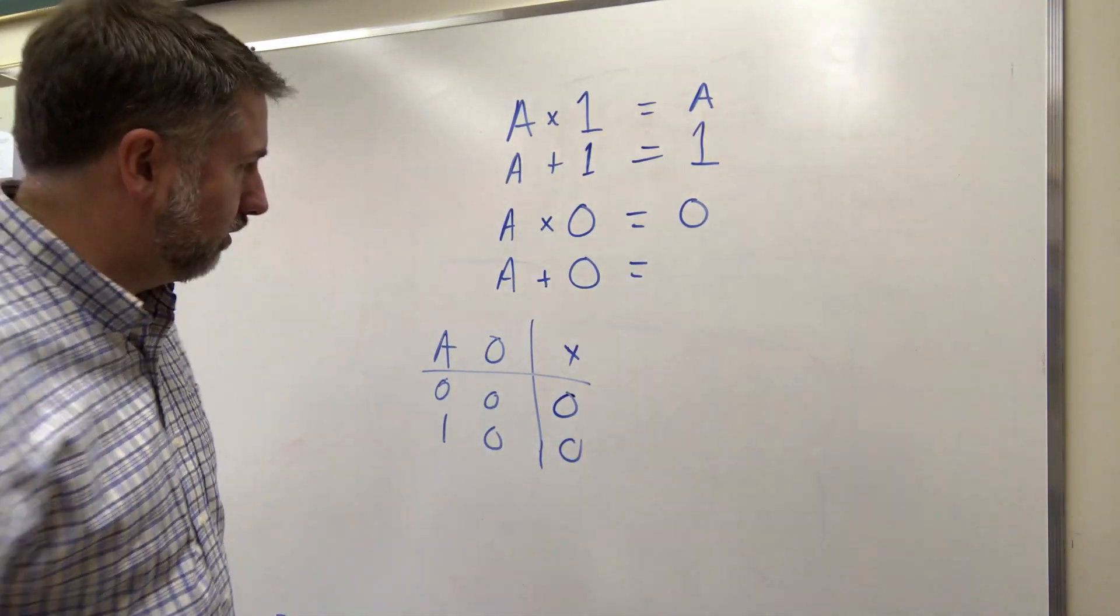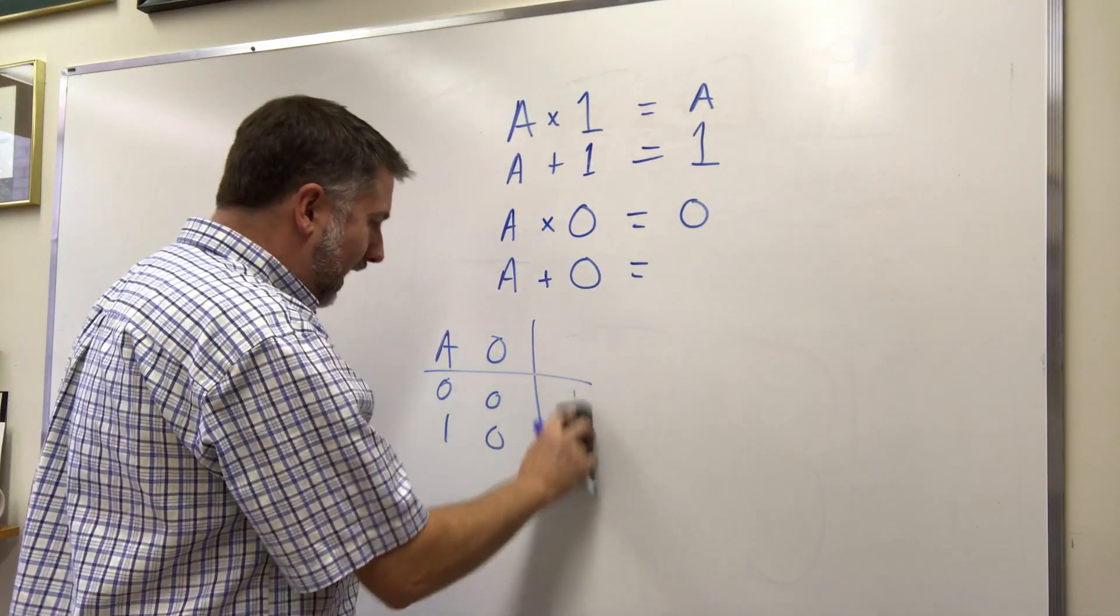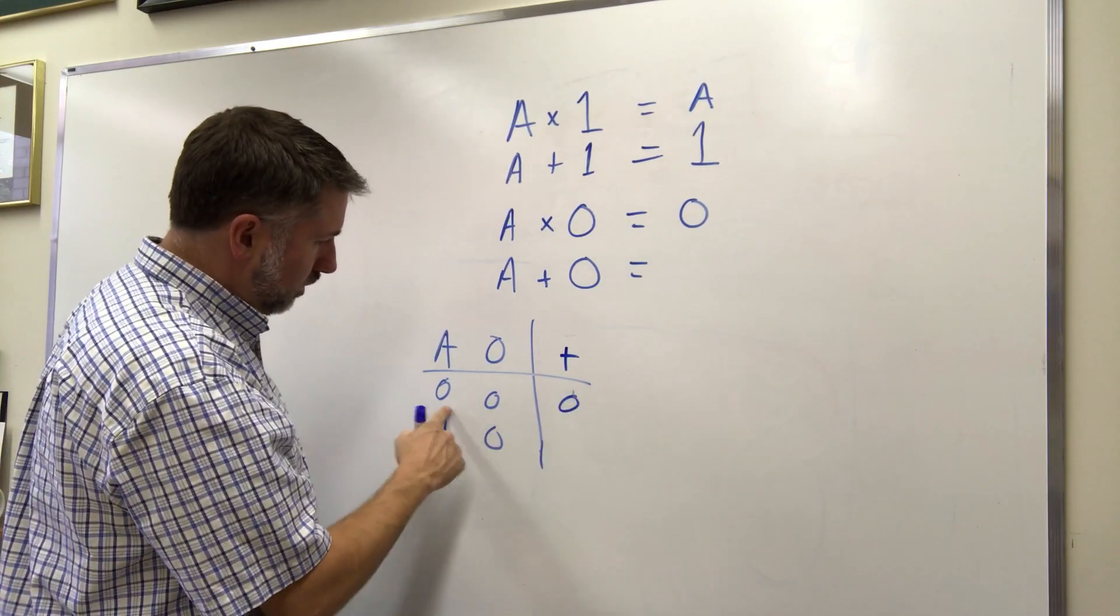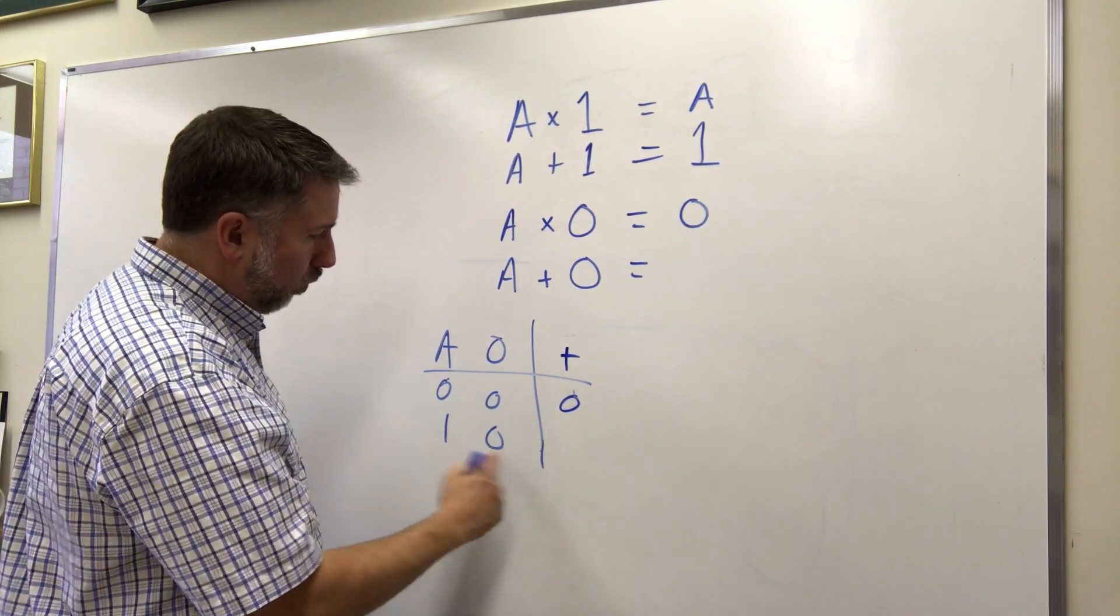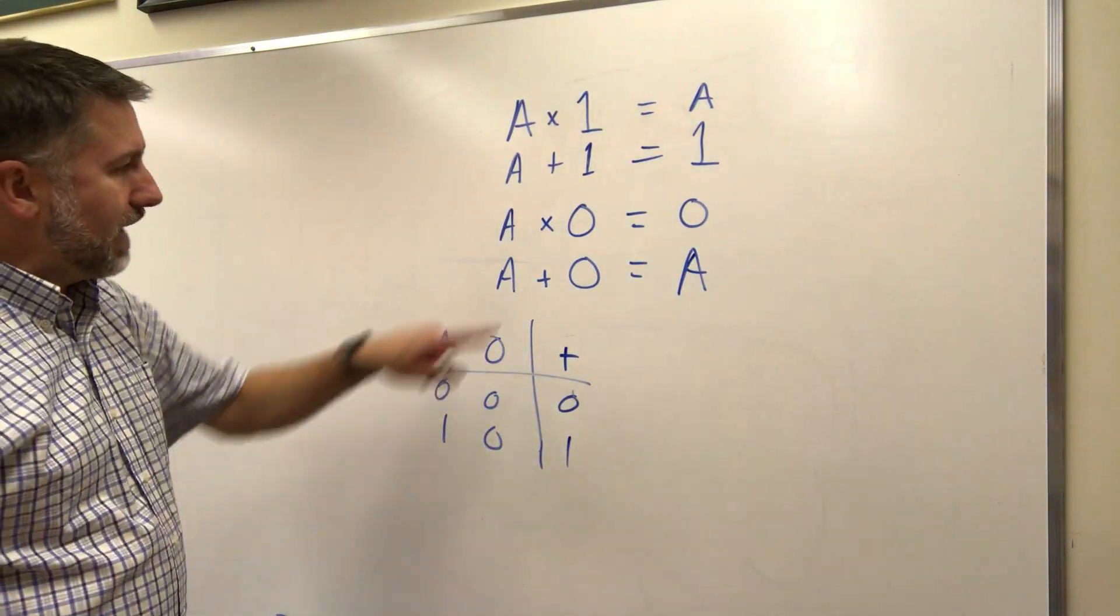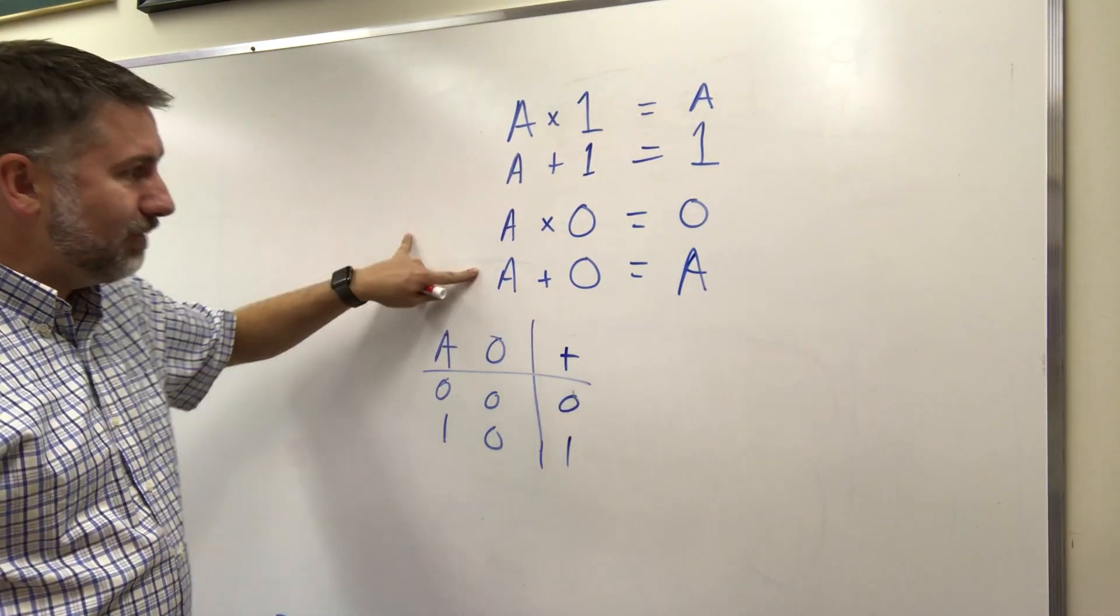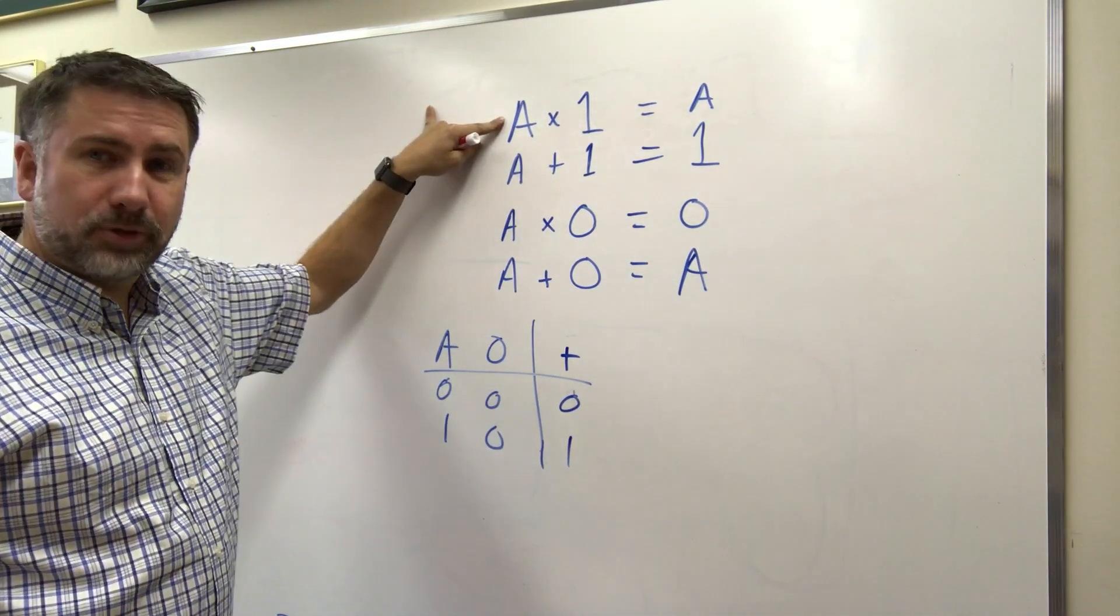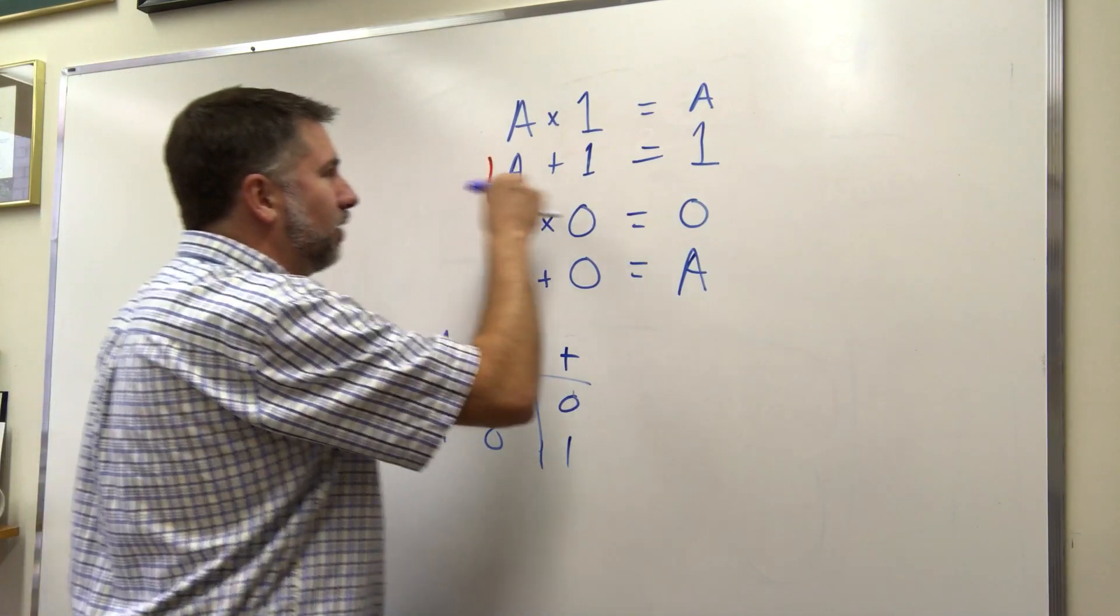What about when we OR with zero? OR is true if either of them are true. And that happens here. Neither of them are true, so we get a zero. One of them is true, so we get a one. And that looks a lot like A. So if we add zero, we get A. So that makes sense with addition. This makes sense with multiplication. This makes sense with multiplication. This is the only one that's a bit weird.